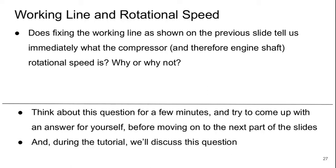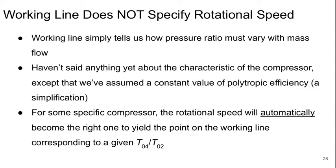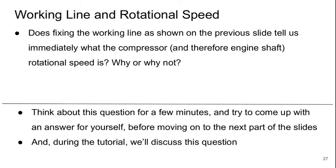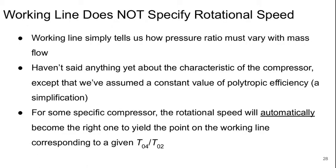Welcome to Part 4 of Lecture 19 of Aerospace Propulsion. Last time we left off with the question: does specifying the working line tell us what the rotational speed of the compressor is? The answer is no. The working line simply tells us how the pressure ratio must vary with mass flow, but we haven't said anything yet about the characteristic of the compressor, except that we've assumed a constant polytropic efficiency.